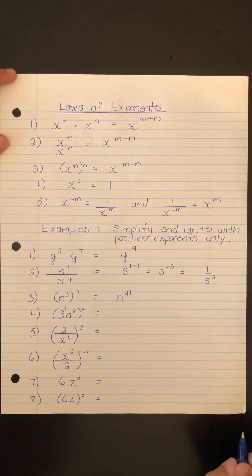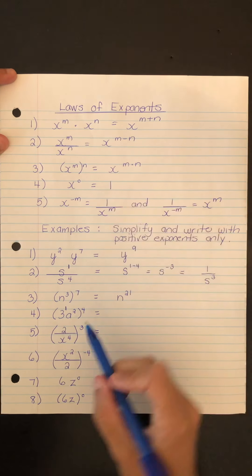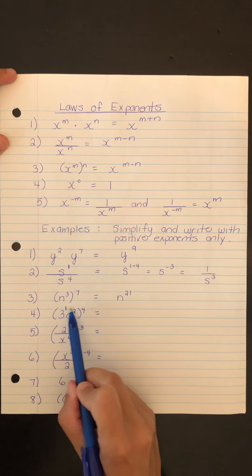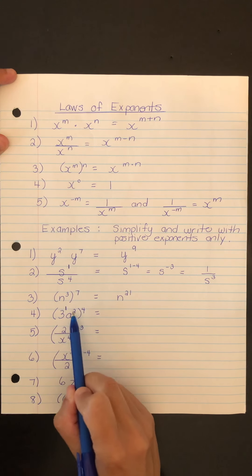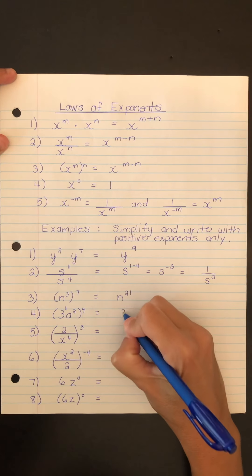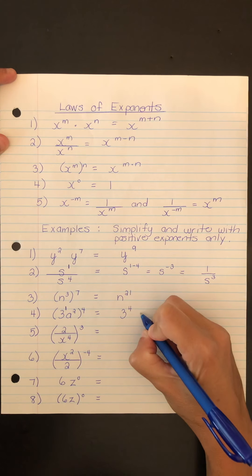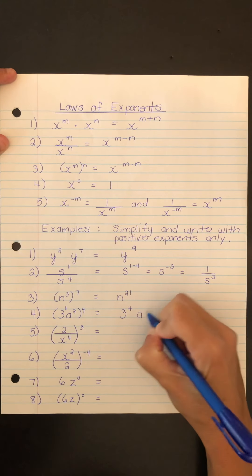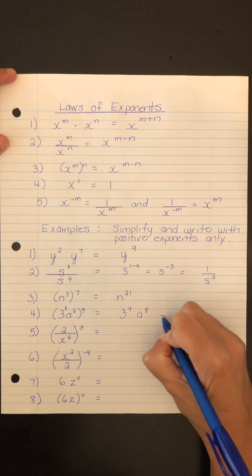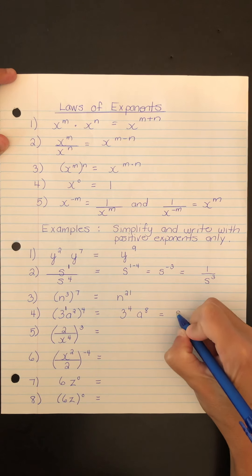Using rule 3, the exponents multiply, so we end up with 3 to the 4 multiplied by a to the 8. And 3 to the 4 is 81.